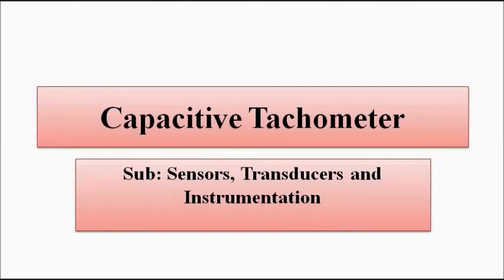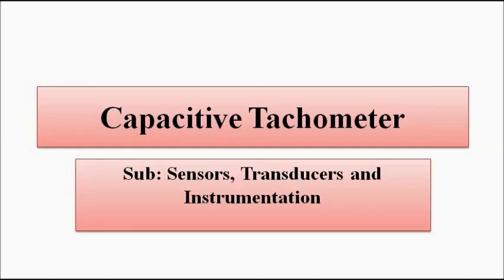Hello friends, welcome to Engineering Tutorial. So far we have discussed about some sensors and transducers in the last 3 or 4 videos related to sensors, transducers, and instrumentation. In this video we are going to discuss about another transducer — the capacitive tachometer — which is a capacitive transducer used for the measurement of angular velocity, or rotational speed.